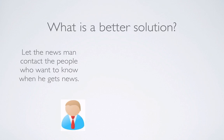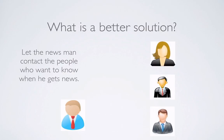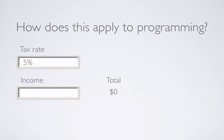So what's a better solution? Let the newsman contact the people who want to know when he gets news. So instead of them all calling him, he says, 'I'll put you on a list and I'll contact you guys when I get any news.' That's a much better solution. But the question is, how does that apply to programming?